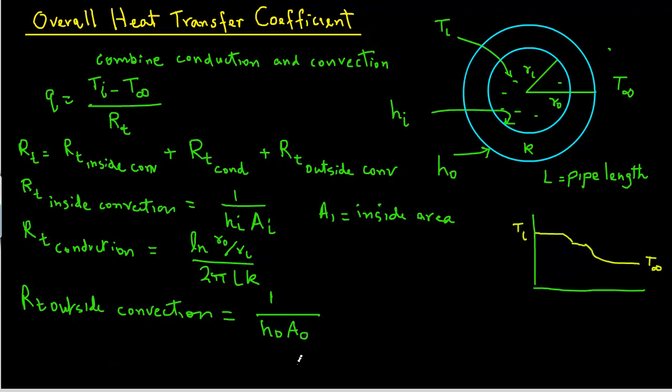Now if we substitute all these different R values into our earlier equation, we have Q equals Ti minus T infinity divided by 1 over Hi Ai plus natural log of Ro over Ri divided by 2π LK plus 1 over Ho times Ao.